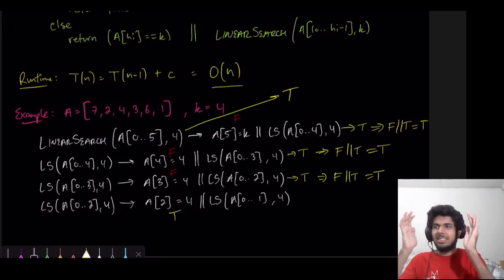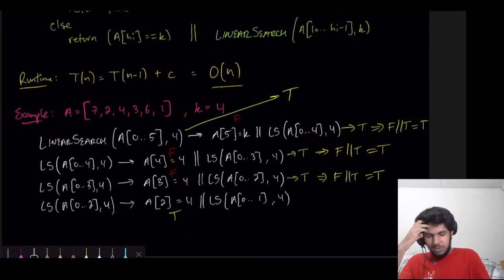We're just consistently truncating our list slowly and steadily. First we considered these elements. That didn't have the 4. So, then we shortened it to this. We didn't find the 4. Shortened it here. Didn't find the 4. Here. Still didn't find the 4. Until we shortened it to this. Then, we found the 4. So, that's all that's going on. Linear time algorithm. Pretty cool.